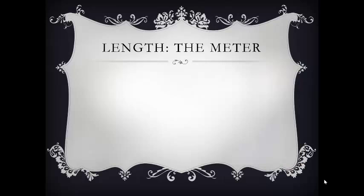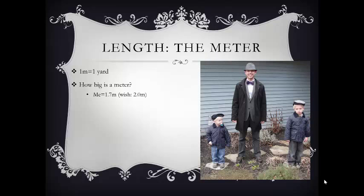The meter is our unit of length — it's approximately equal to a yard. That's useful for those who play football or soccer: a soccer field is 100 meters long, which is about 100 yards, and in football you're always trying to go 10 yards, which is approximately 10 meters. To give an idea of sizes in meters: I'm about 1.7 meters, or 170 centimeters, which is how people in many countries measure height. My son on the right is probably about 0.8 meters in that picture, and my youngest son on the left is about 0.6 meters.